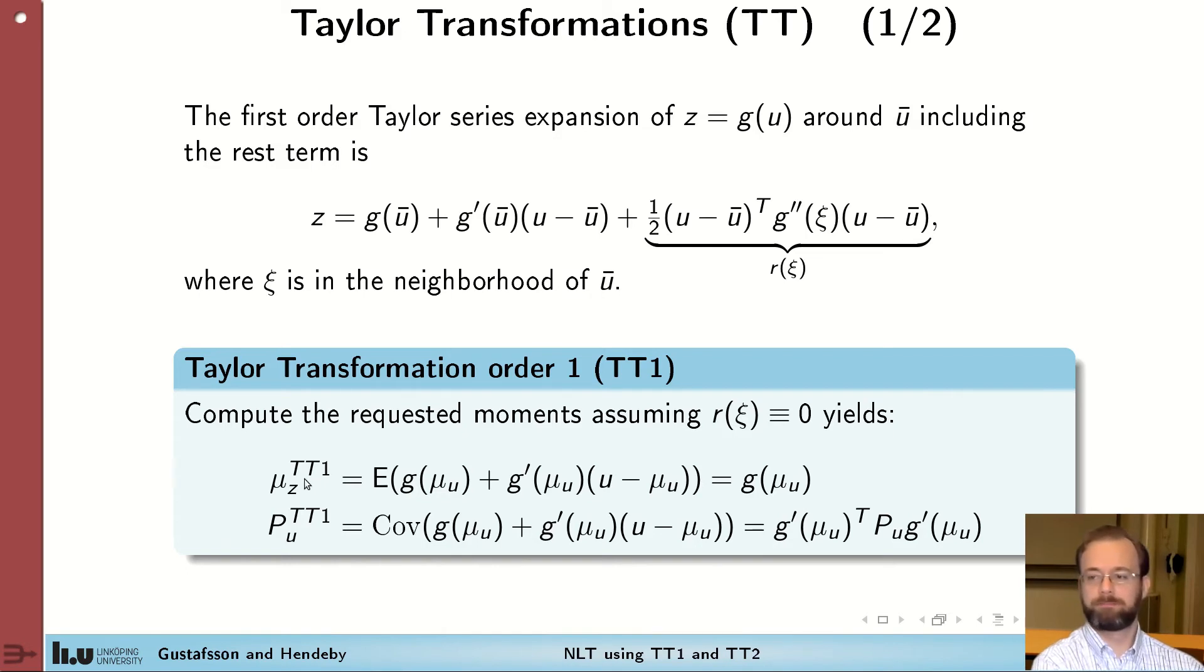We make the approximation around the mean of the distribution and take the expected value of the linear part. We notice that this cancels out as the expected value of u is mu_u. So this becomes zero and we only get the constant term left.